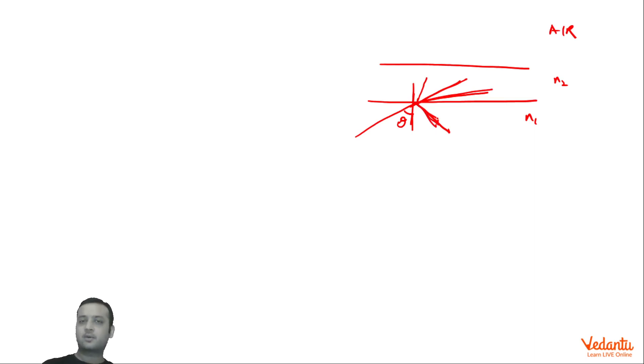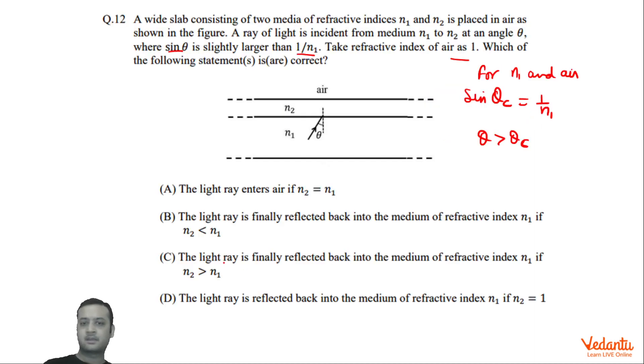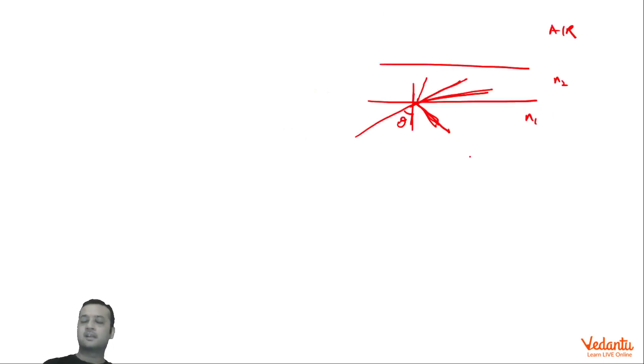Now if TIR happened here, that means ray has come back in medium N1. In that case B, C, D will be correct. Now for the remaining three cases, I will prove the ray will eventually suffer TIR at this interface.